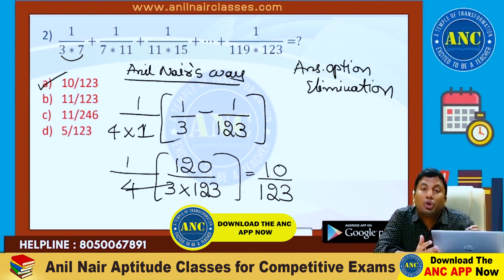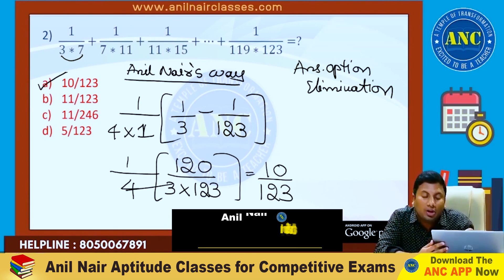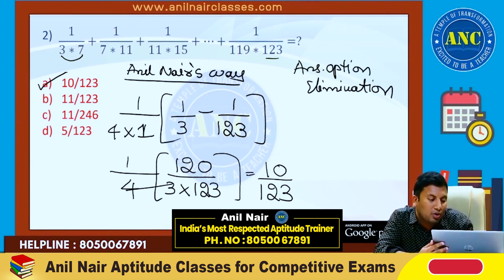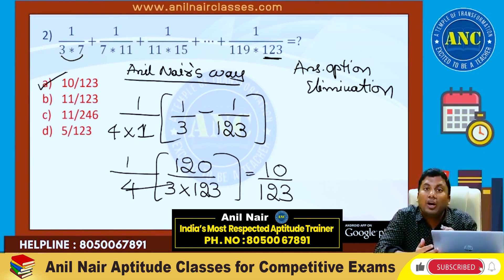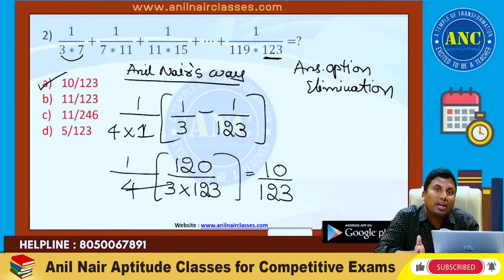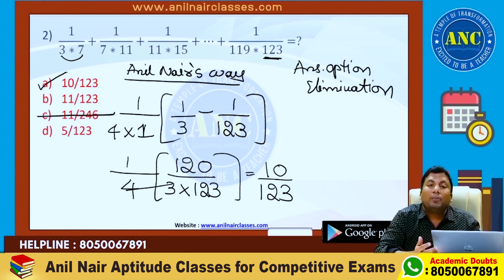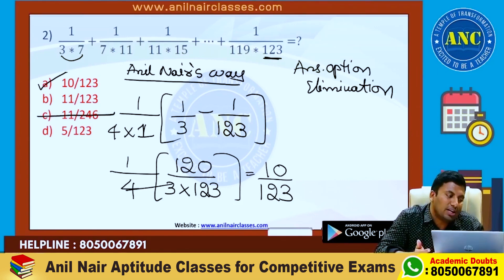Denominator: if two numerical values are there in the denominator, the answer should contain one numerical value. The last numerical value is 123. Either it should be 123 or a factor of 123. 246 is a multiple of 123, so answer option 11/246 is eliminated.